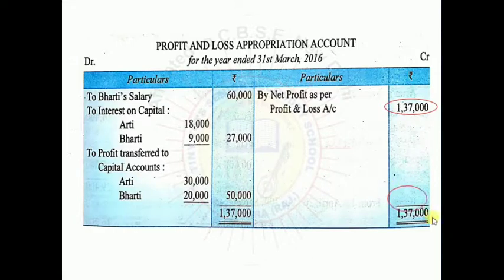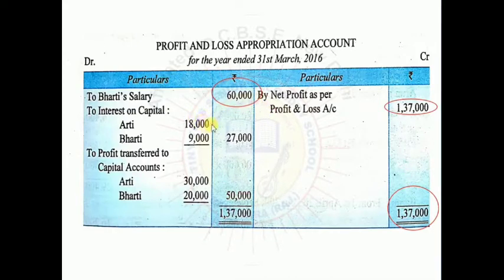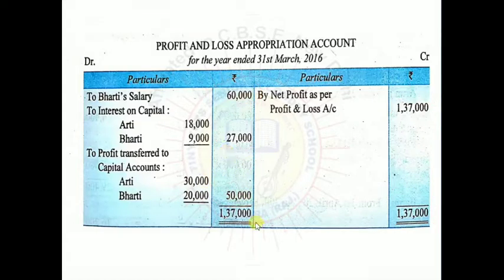No more entries come into P&L Appropriation Account, so let's close it. Credit balance is Rs.1,37,000. Subtracting Bharti's salary Rs.60,000 and interest on capital Rs.27,000, the balancing figure remaining is Rs.50,000.